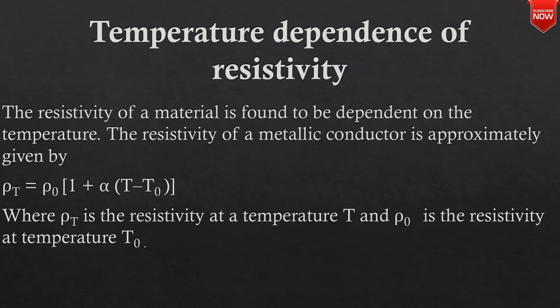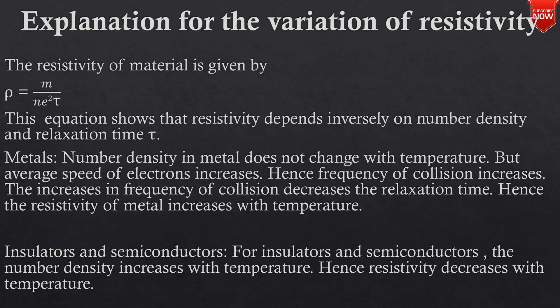The resistivity at temperature T is approximately given by rho T equals rho 0 into 1 plus alpha into T minus T0, where rho T is the resistivity at temperature T and rho 0 is the resistivity at temperature T0. The resistivity of a material is given by rho equals m divided by n e squared tau, showing that resistivity depends inversely on number density and relaxation time.